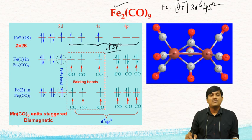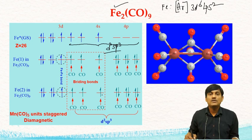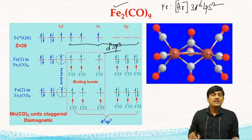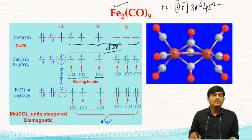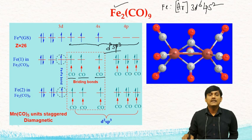For the second iron atom, there is also d²sp³ hybridization, giving 3 hybridized orbitals with unpaired electrons and 3 empty orbitals. The 3 empty orbitals are filled by 3 terminal CO ligands, and the 3 orbitals with unpaired electrons are filled by 3 bridged CO ligands. So finally, Fe₂CO₉ has 3 bridging COs and 6 terminal COs.